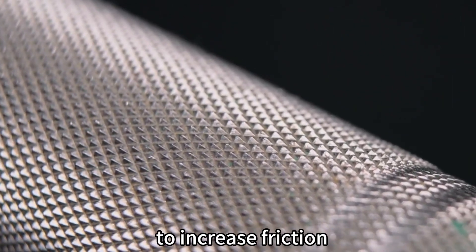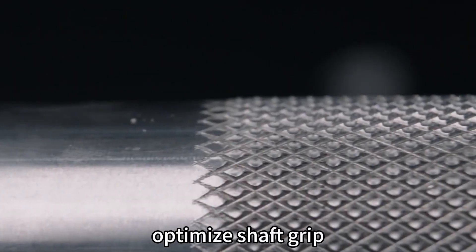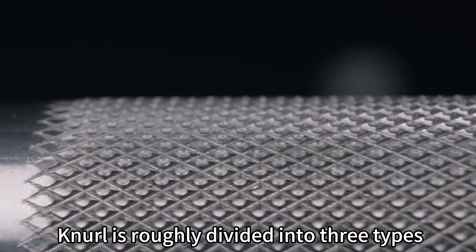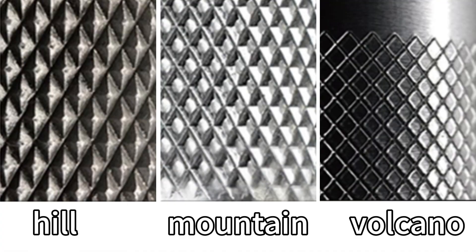Knurling is used on barbell bars to increase friction and optimize shaft grip. Knurl is roughly divided into three types: Hill, Mountain, and Volcano.